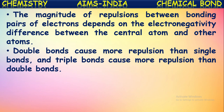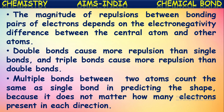One more factor affecting the shape of the molecule is multiple bonds. Double bonds cause more repulsion than single bonds, and triple bonds cause more repulsion than double bonds. However, multiple bonds between two atoms count the same as a single bond in predicting the shape, because it does not matter how many electrons are present — all electrons in one direction between two atoms are considered as one bond while predicting the shape.